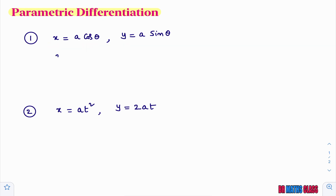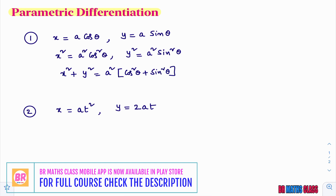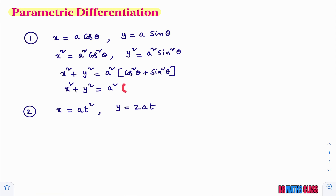If you square the first equation, you will get x square equal to a square cos square theta. If you square the second equation on both sides, you will get y square equal to a square sin square theta. Now, add equation 1 and equation 2. On the left hand side you get x square plus y square. On the right hand side, you take a square common: a square into cos square theta plus sin square theta. We know that cos square theta plus sin square theta equals 1, so what you get is x square plus y square equal to a square.